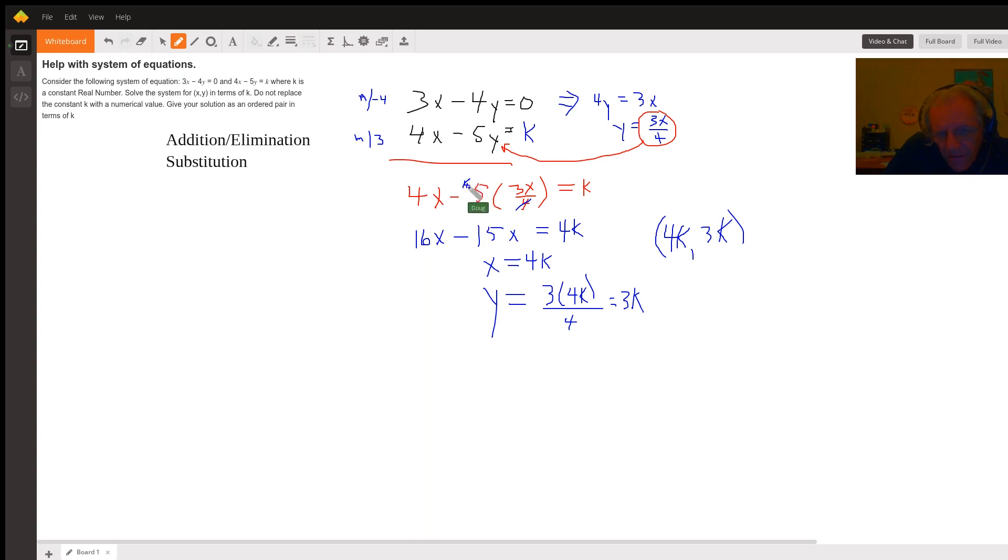That's minus 15x. Don't forget to multiply the k by 4, and you get 4k. So 16x - 15x is x, therefore x = 4k.